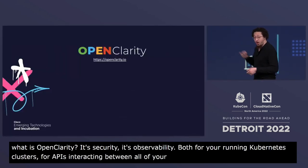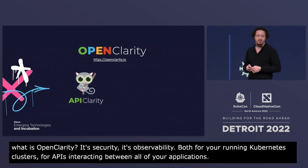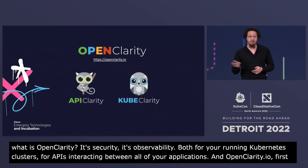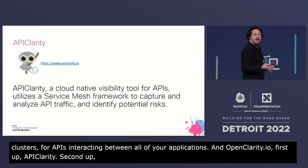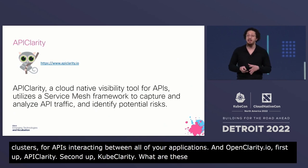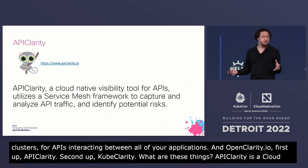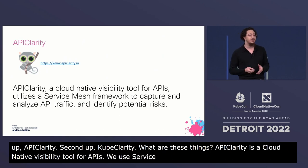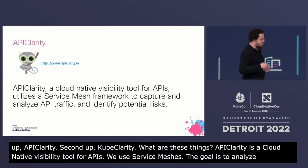OpenClarity.io — first up, API Clarity. API Clarity is a cloud-native visibility tool for APIs. We use service meshes. The goal is to analyze API traffic, capture your risks, and mitigate them.